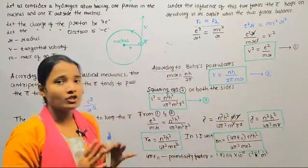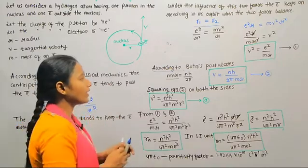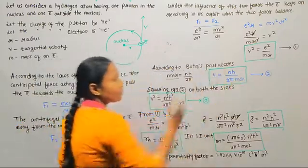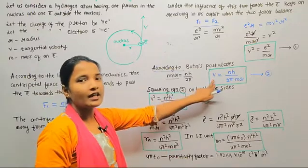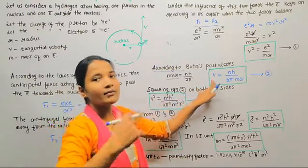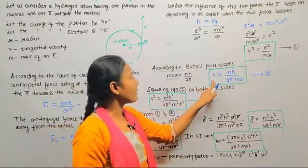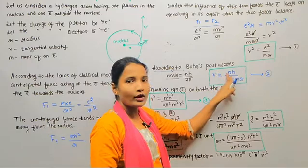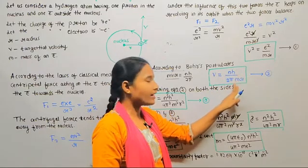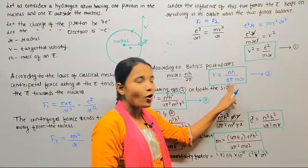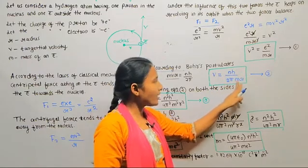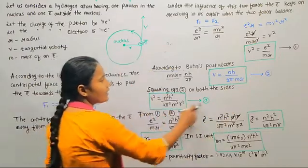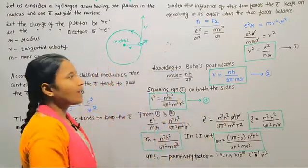Now, squaring equation number 2 on both sides: v square is equal to n square h square divided by 4 pi square m square r square. Call it equation number 3.